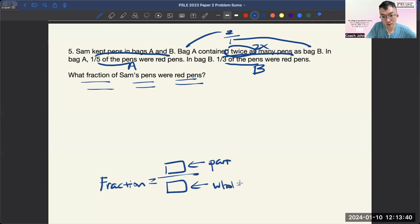So, in this case, for the whole will be Sam's pens, and part will be the red pens. So we need to find 2 information. Let's work with where we have bag, let's look at bag A twice or bag B. So, in a sense, I can just write a ratio, 2 is to 1.